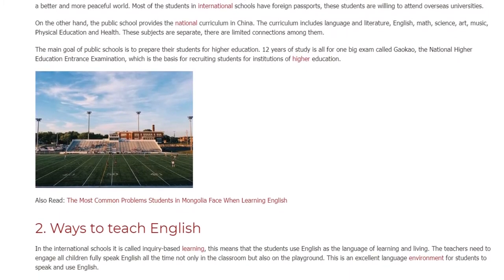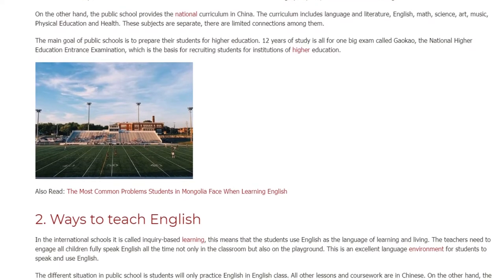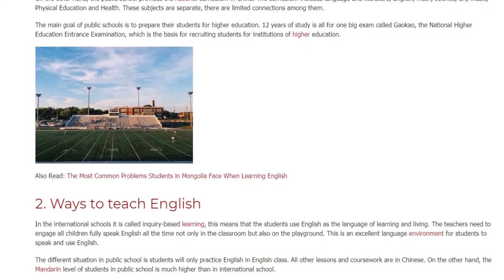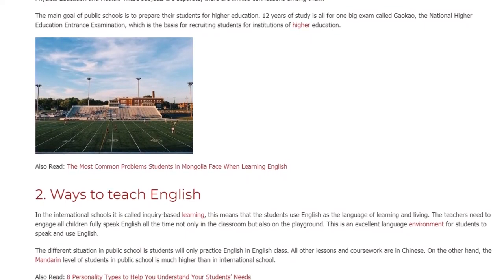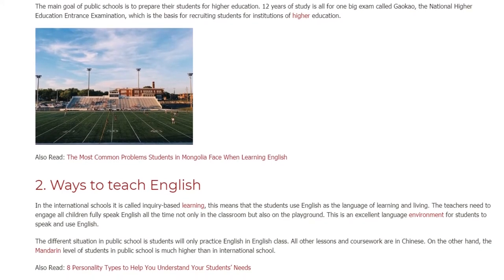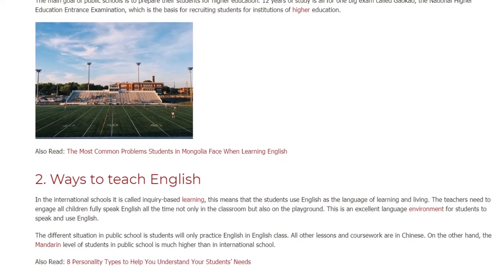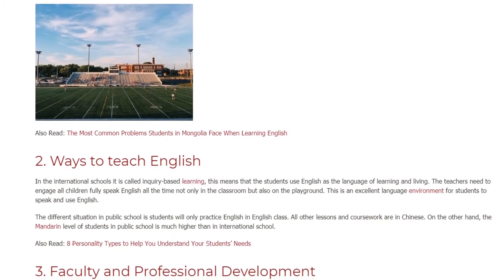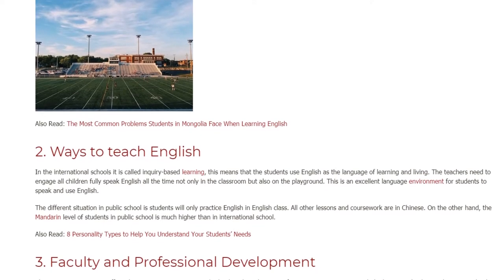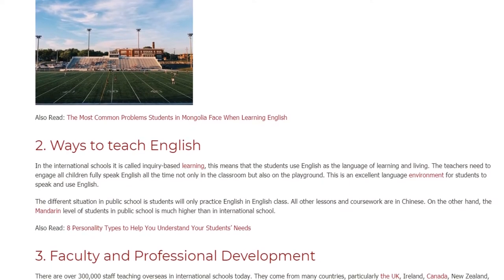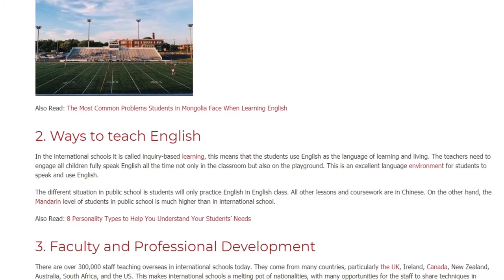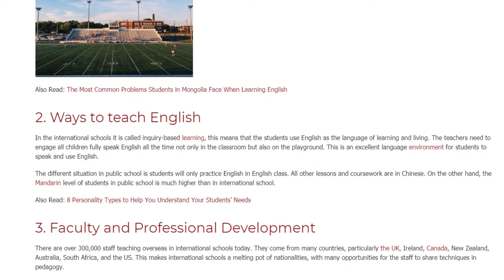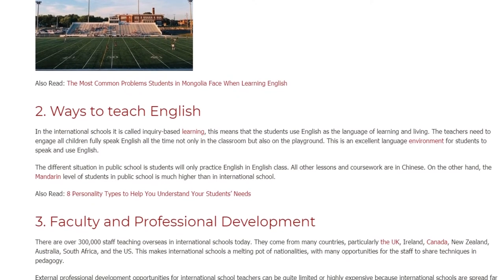2. Ways to teach English. In international schools it is called inquiry-based learning. This means that students use English as the language of learning and living. Teachers need to engage all children and speak English all the time, not only in the classroom but also on the playground. This is an excellent language environment for students to speak and use English. In public schools, students will only practice English in English class. All other lessons and coursework are in Chinese. On the other hand, the Mandarin level of students in public school is much higher than in international school.